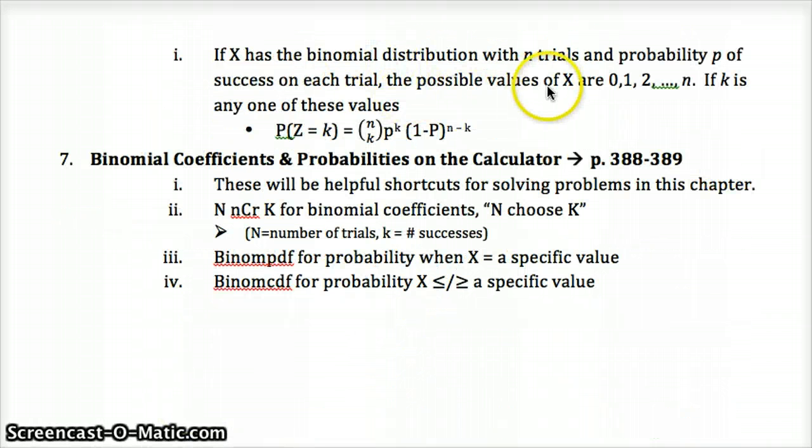So if X has a binomial distribution in N trials, and the probability is P, possible values of X are 0, 1, 2, and so on to N, meaning you can't have more successes than total trials. The probability that X equals K would be the number of possible combinations times P to the K times 1 minus the probability to the N minus K.